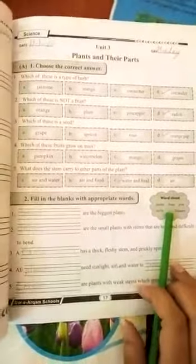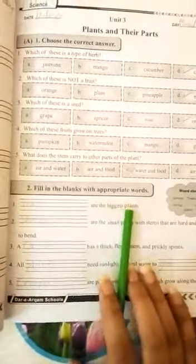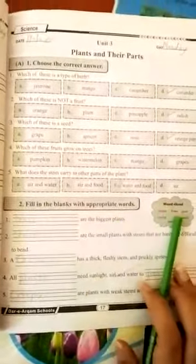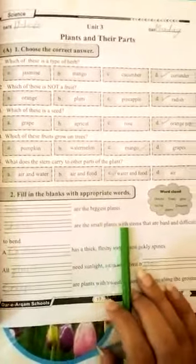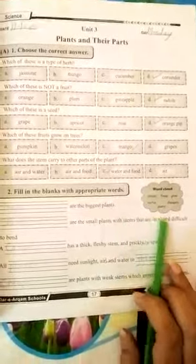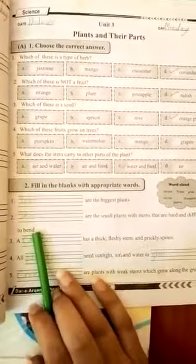Number one, blank are the biggest plants. Trees are the biggest plants. Number two, blank are the small plants with stems that are hard and difficult to bend. Answer is shrubs.